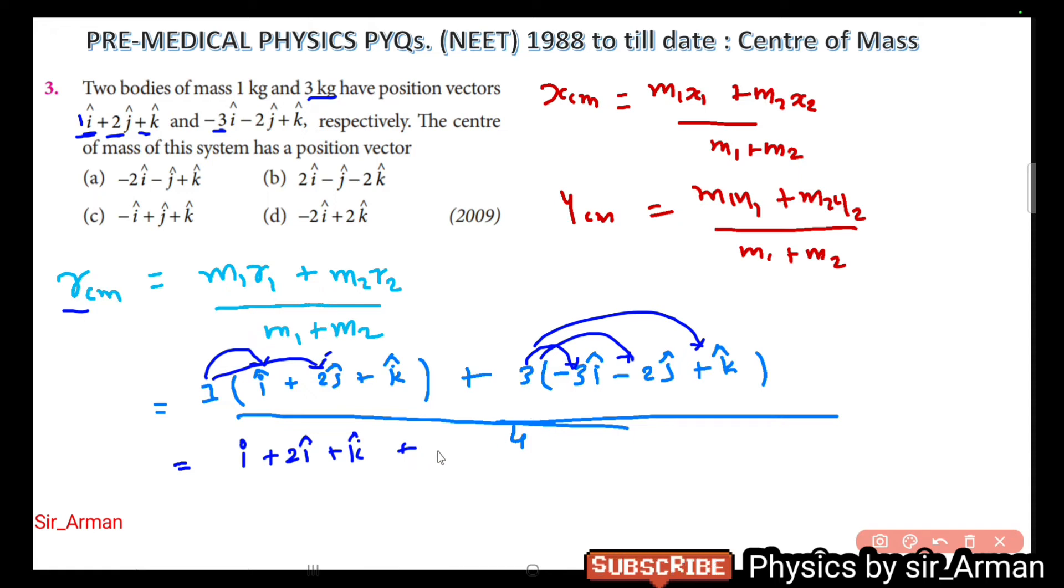So if you multiply, the first term is i plus 2j plus k cap, that is 1k. If you multiply this 3 with this, it is minus 9i, then 3*2 is 6, again it is minus so it is minus 6j, and 3*1 is 3 so it is plus 3k cap, divided by the mass 4 kg. So you just add: i minus 9 is minus 8i.